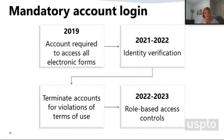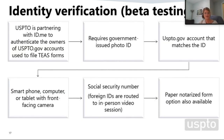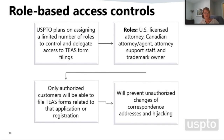Phase 3 of login is role-based access controls. The USPTO plans on assigning a limited number of roles to control and delegate access to TEAS form filings. The proposed roles are: U.S.-licensed attorney, Canadian attorney or agent, attorney support staff, and trademark owner. Only authorized customers with those roles will be able to file TEAS forms related to the application or registration. This will stop hijacking and unauthorized changes of correspondence addresses, and improve the security of our systems.